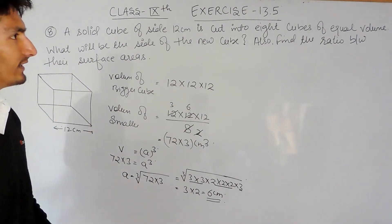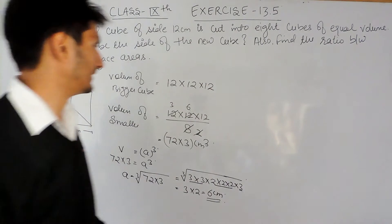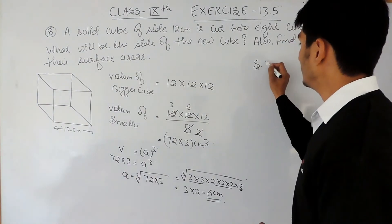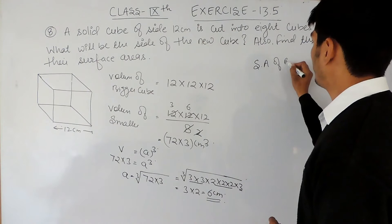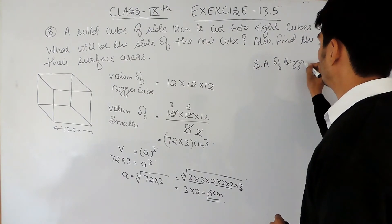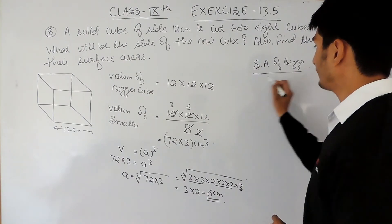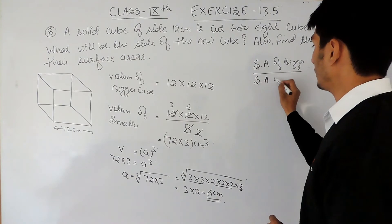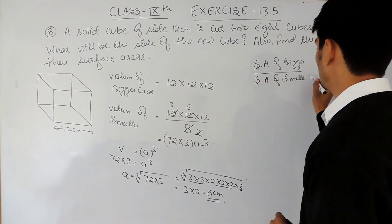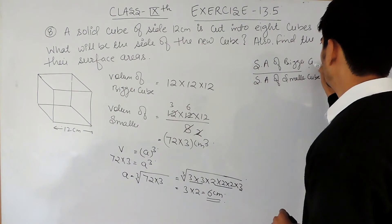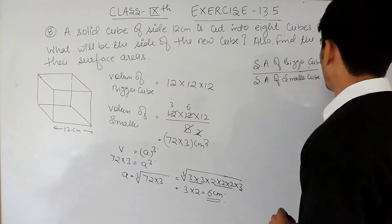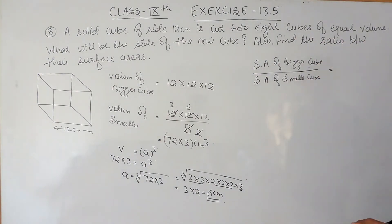Now in the second part, I have to find the ratio of their surface areas. So the surface area of the bigger cube, and I have to find the ratio of the surface area of the smaller cube. And the formula to find out the surface area is 6a² upon 6a².